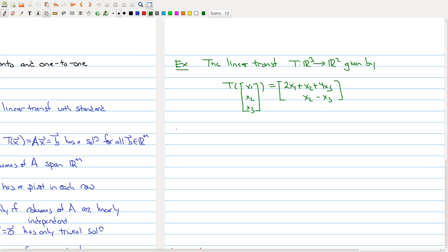You can figure out what the standard matrix is, but I'll just tell you what it is. So this has standard matrix A, which is 2, 1, 4, 0, 1, minus 1. And the nice thing is this standard matrix is already in echelon form. So I can actually figure out where the pivots are. So here are the pivots.